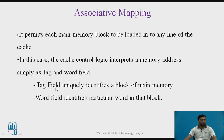The tag field uniquely identifies a block of main memory — which block is present in a particular cache line. The word field identifies a particular word within that available block.